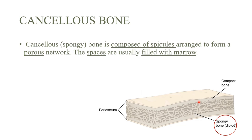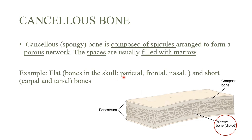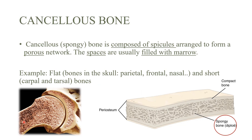Examples of where you can find spongy bone include flat bones such as the frontal bones of the skull, and short bones like the carpal and tarsal bones of the limbs. This is how it looks up close in reality.